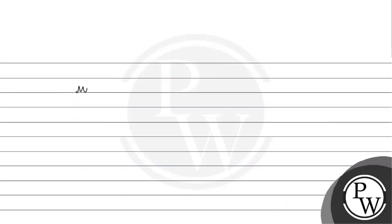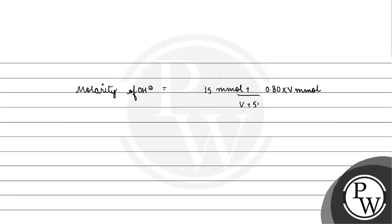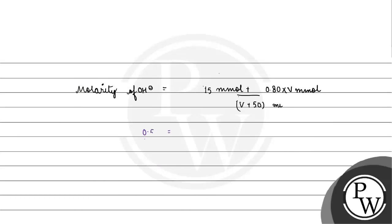Now the molarity of hydroxide ion will be: molarity of hydroxide ion = (15 millimoles + 0.80 × V millimoles) divided by (V + 50) ml. The required molarity is 0.50 mol per liter.